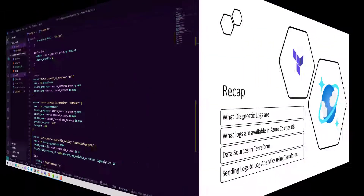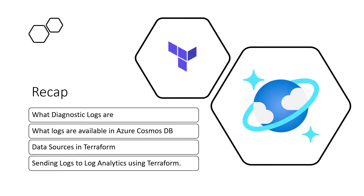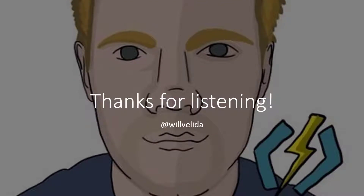That's the end of the demo — let's recap. In this video, we learned what diagnostic logs are and what kind of logs we can generate from Azure Cosmos DB. We then learned what data sources are in Terraform and how we can use them to import resources not defined in our Terraform configuration files. Finally, we learned how to send diagnostic logs from Azure Cosmos DB to Log Analytics using Terraform. Thanks for watching — I hope you found that useful. If you have any questions, leave them in the comments. If you like this video, give it a like and subscribe for more content. If you have any suggestions or topics you'd like me to cover, let me know in the comments. Thanks for watching and I'll see you all next time.